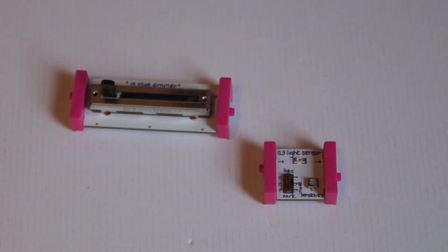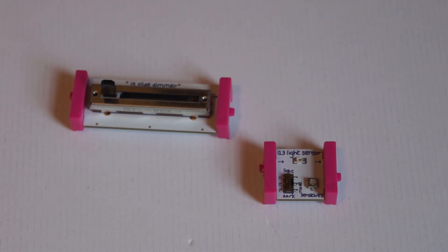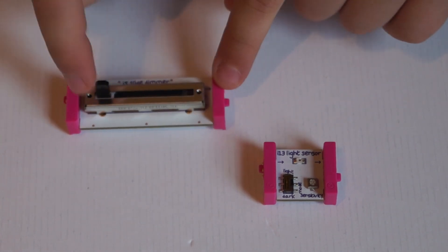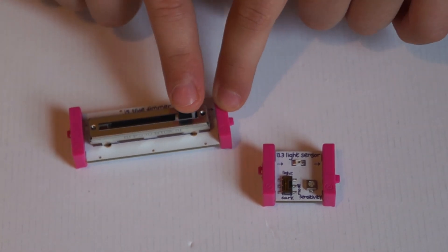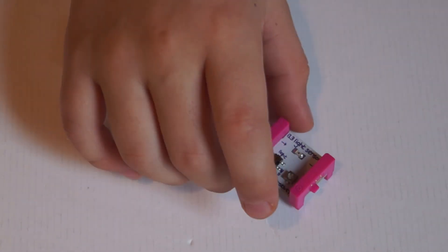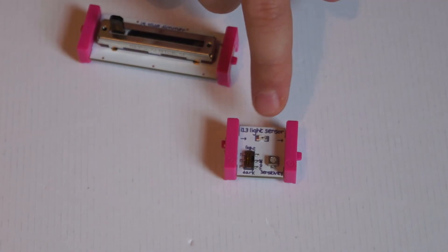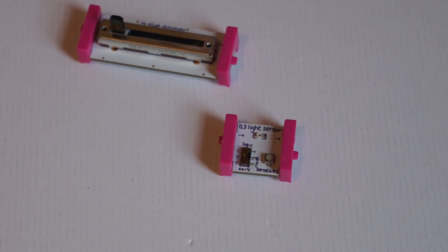So on to the next bit. Alright, so these are the input bits. We have a slider, a light sensor, and the slider, you probably already know what it is. You control the level of power going through, and these are magnetic. And then this is the light bit. This is the switch for light to dark light sensor, and then the sensitivity screw.